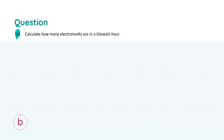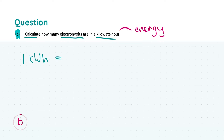Looking now at part B, we're asked to calculate how many electron volts are in a kilowatt hour — so there's a conversion involved. The first thing to know is that a kilowatt hour is a measure of energy. We need to calculate the energy associated with one kilowatt hour in joules, and then convert that into electron volts. So first I'll find the number of joules in a kilowatt hour. We have 1 kilowatt hour and the prefix kilo means there are 1000 watts.